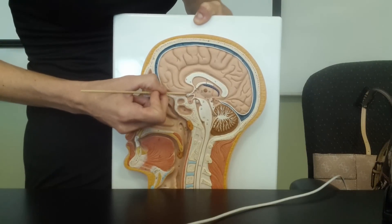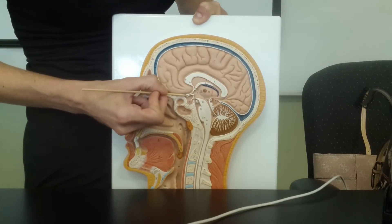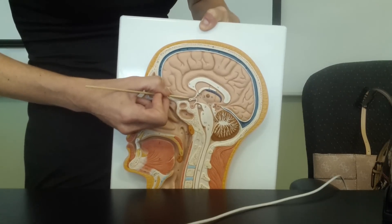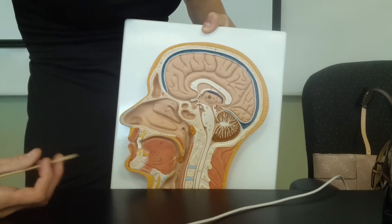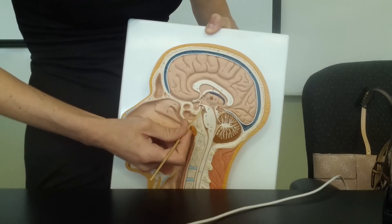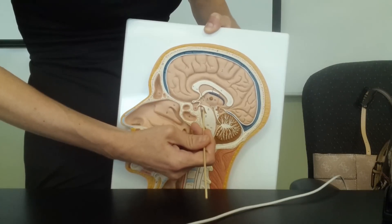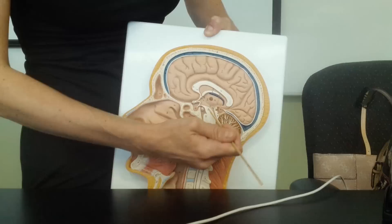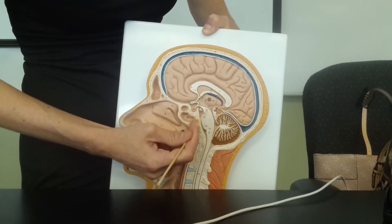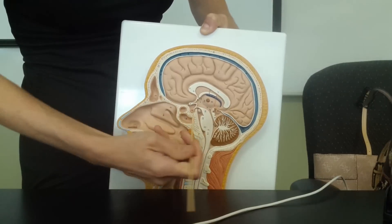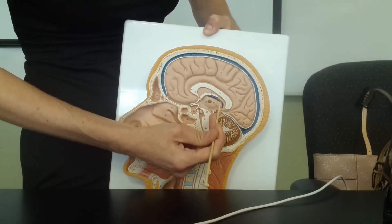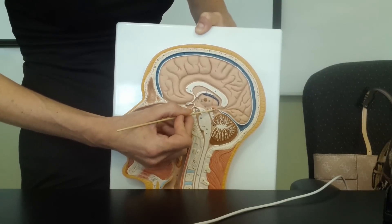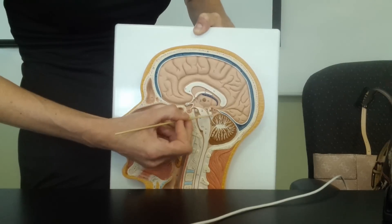Right in front of the pituitary gland, this little white bulge right here is the optic chiasm — that's where the optic nerves from the eyes come in and meet the brain. Right behind the pituitary gland is a mammillary body; we have two mammillary bodies that hang off underneath the midbrain. If we go around the back of the thalamus we have the pineal gland, where we release melatonin to control our sleep cycles.